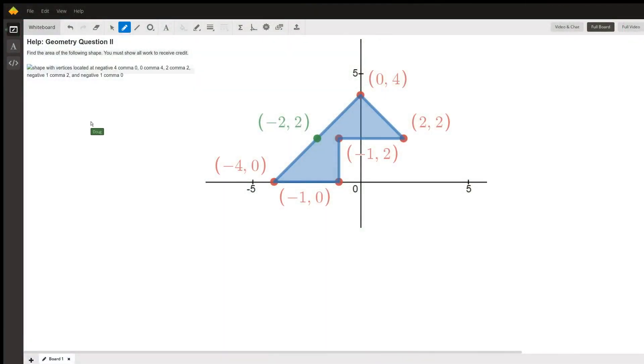The graph of the shape with the given vertices looks to me like the most straightforward way to go is to draw this segment right here and essentially divide the region into two shapes that are fairly easy to find the area of and add those together.